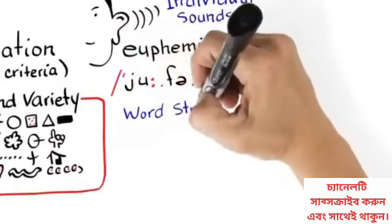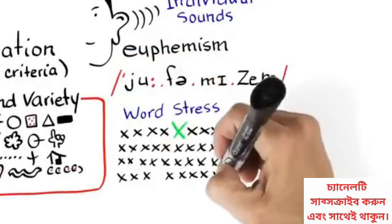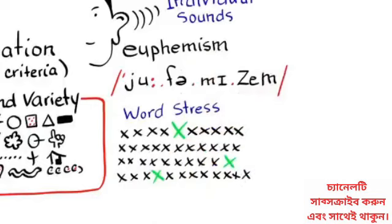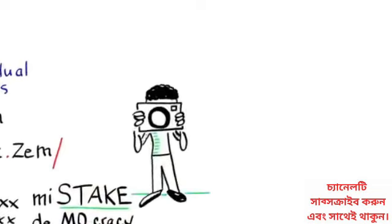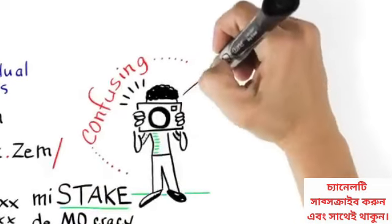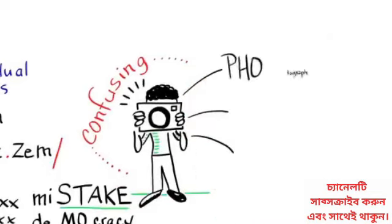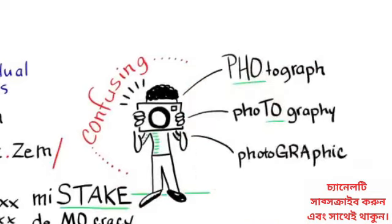Word stress. Stressing the wrong syllable in a word is a frequent error. For instance, it should be mistake, democracy. Word stress can be confusing when it changes with different parts of a word family. For instance, photograph, photography, photographic.